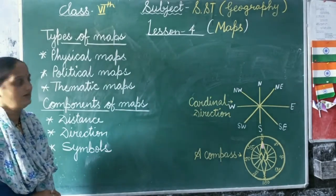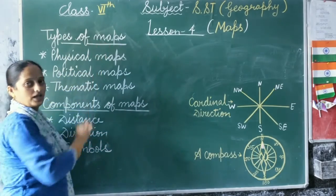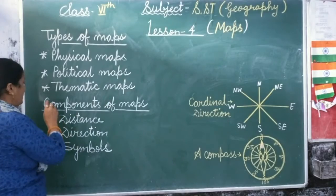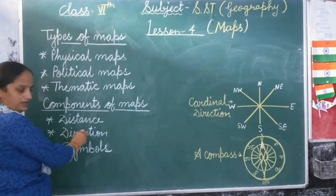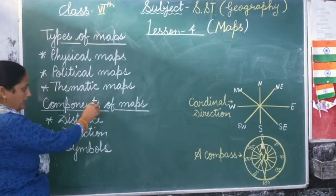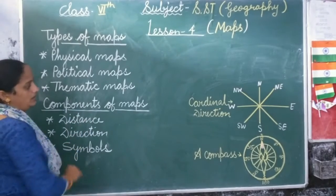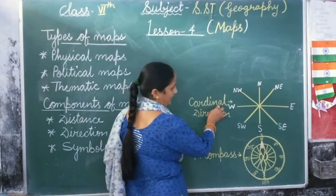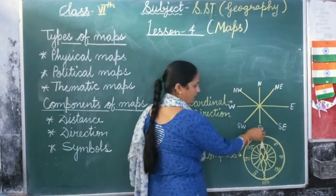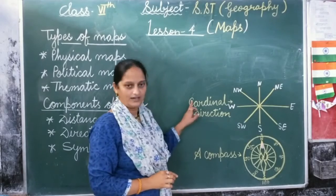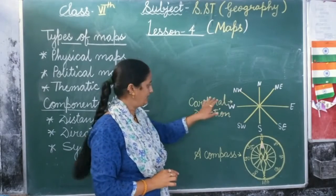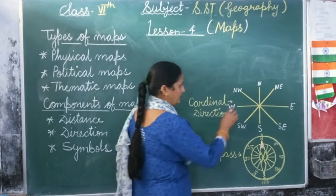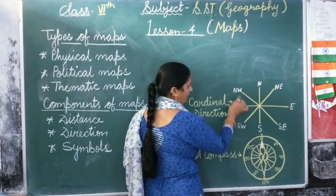In this lesson we will learn: types of maps — physical maps, political maps, and thematic maps. We will also learn the components of maps: distance, direction, and symbols. We will also learn about a compass and direction. There are four major directions: North, South, East, and West, also known as cardinal directions. Besides these, there are intermediate directions: North East, South East, South West, and North West.